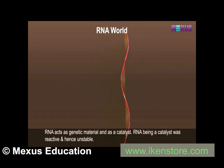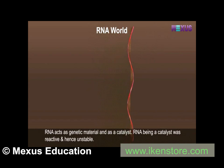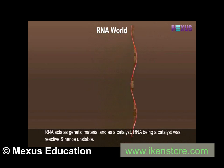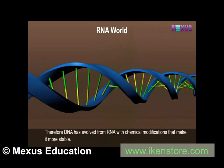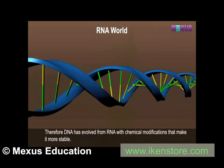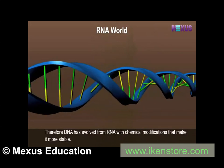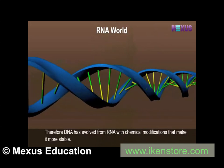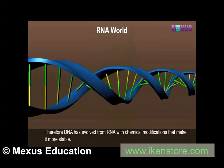RNA acts as genetic material and as a catalyst. RNA being a catalyst was reactive and hence unstable. Therefore, DNA has evolved from RNA with chemical modifications that make it more stable.